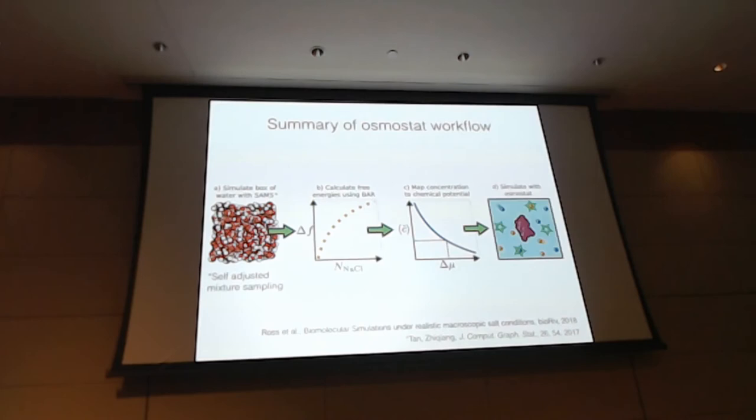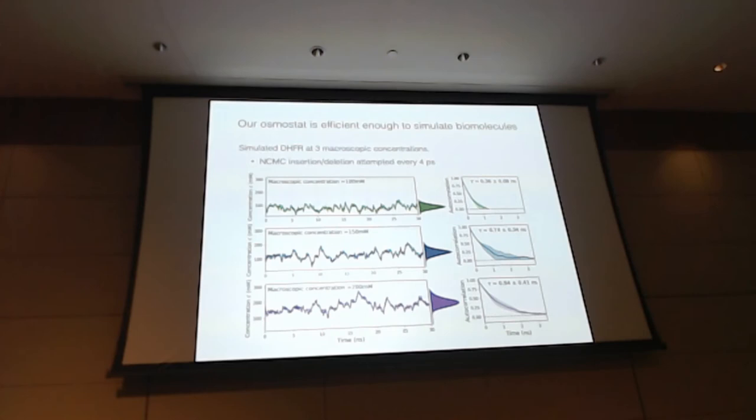So when applied to a protein, DHFR, you can see that the salt concentration fluctuates over time, and these are different macroscopic salt concentrations, and that the autocorrelation time is on the order of a nanosecond. So if you want roughly tens of independent samples, you need to run for tens of nanoseconds.